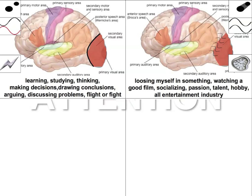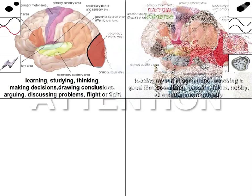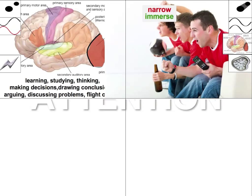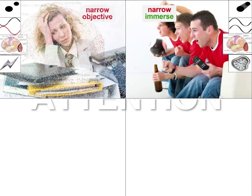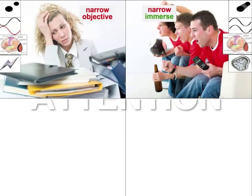To summarize this part: Open Focus Theory classifies Narrow Immersed Attention Style, where we feel connected or in synchrony, and Narrow Objective Attention Style, when we feel separated. Both of them are narrow because we feel connected or separated with one object, person, or one source of stimuli at a time.